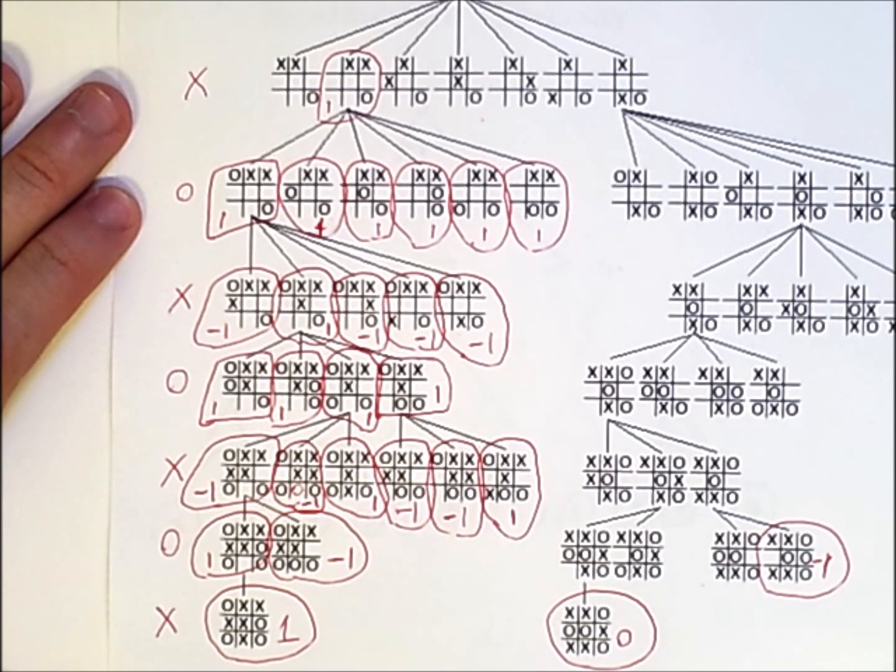I've assigned values of 1, negative 1 to states in a portion of this tree. Now, as you can see, this tree is somewhat boring because it is filled with only three values: 1, negative 1, and the occasional 0.